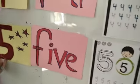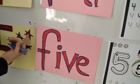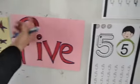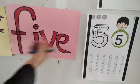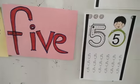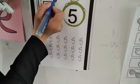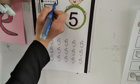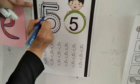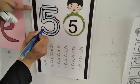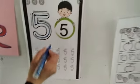The last number is number 5. This is number 5 — one, two, three, four, and five stars. This is the word for 5. How do we write number 5? We have three steps to write number 5. We write it in this way.